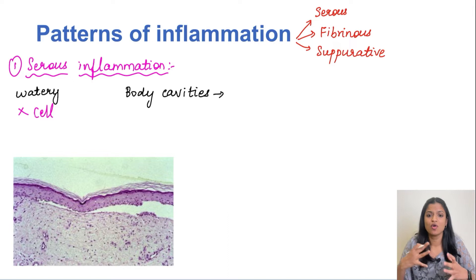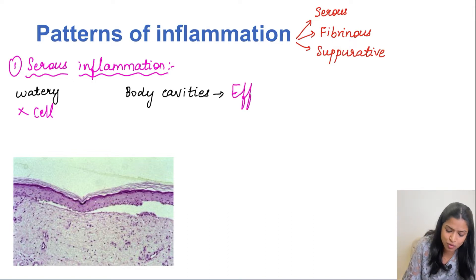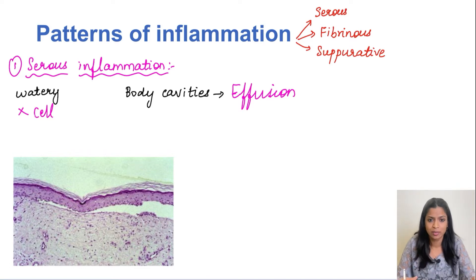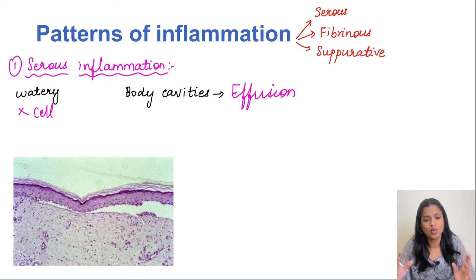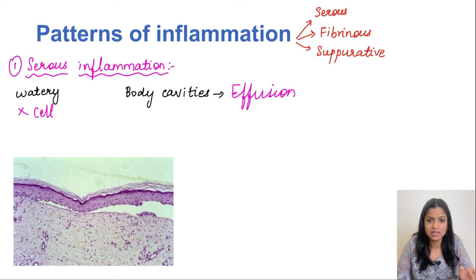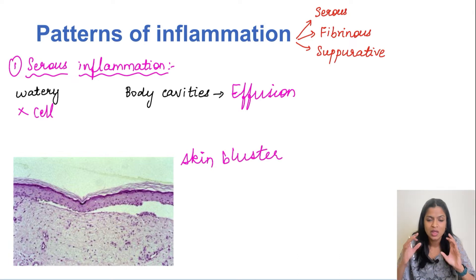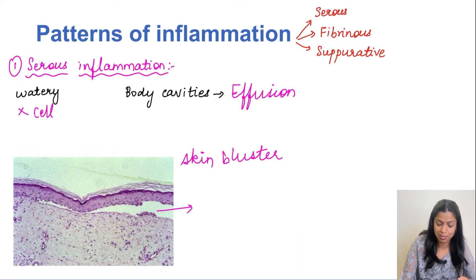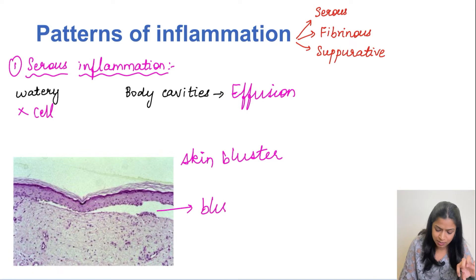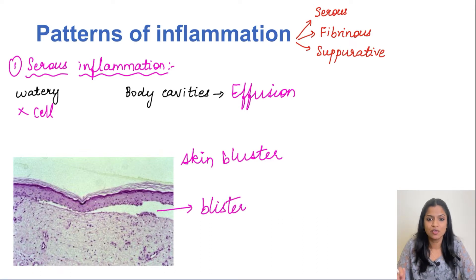It is a cell-poor fluid — inflammatory cells are not present, only the edema fluid — and it is seen especially in body cavities or in spaces created by cell injury itself. In body cavities this fluid accumulation is referred to as effusion. The best example of serous inflammation in a space created by cell injury is a skin blister. When we get burns we develop a blister, which is nothing but serous inflammation — the edematous fluid collected in the gap between the epidermis and dermis.